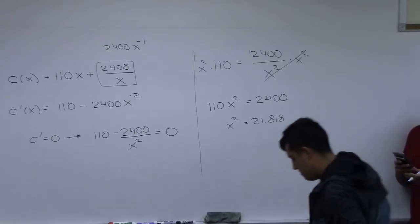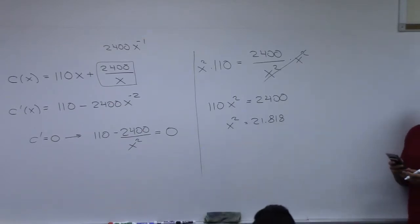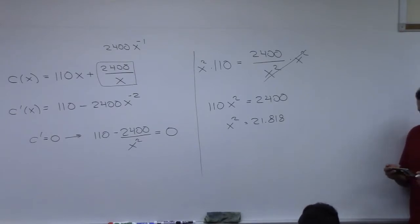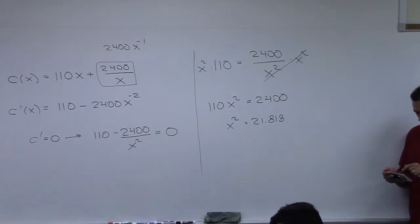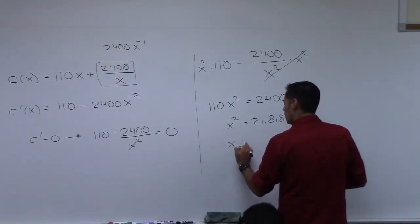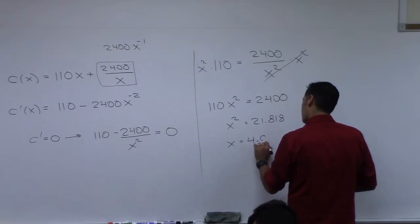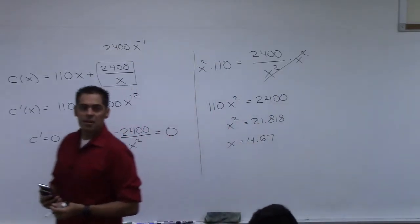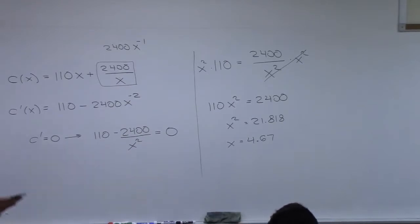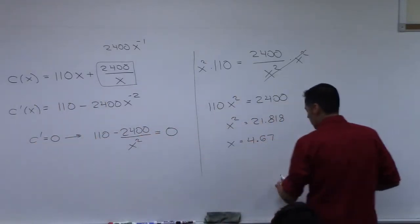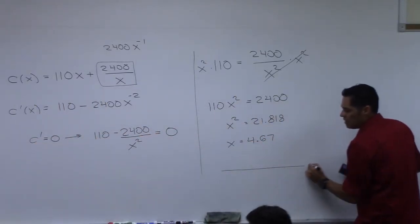Then you take the square root, and you get approximately 4.67. That is the only critical number we have.